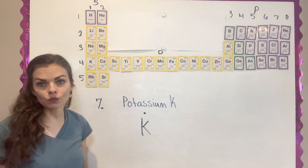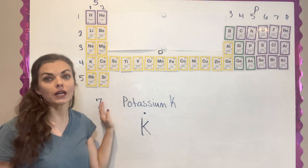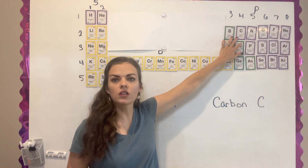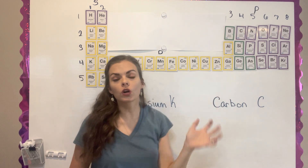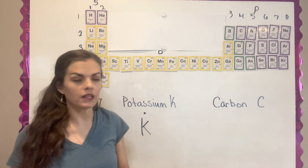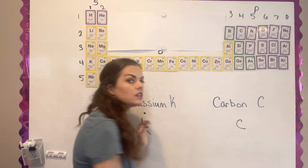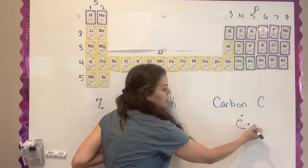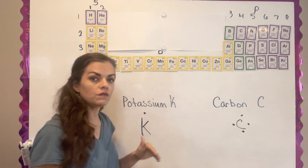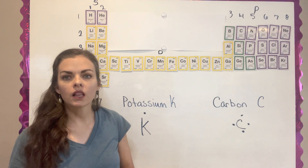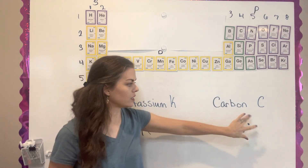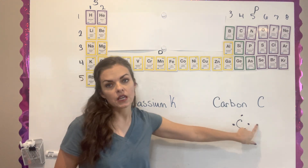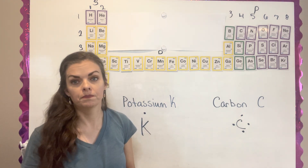That's how you draw a Lewis structure showing potassium has one electron. Now we're going to work through some of these and I'll show you the method for filling it in when it has more than one. For part B, we have carbon. Carbon is down here and it has a four above it, so it has four valence electrons.